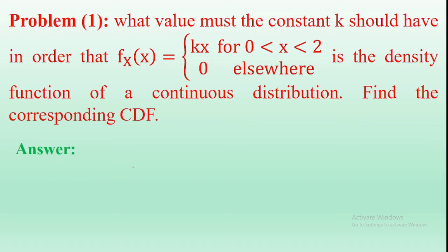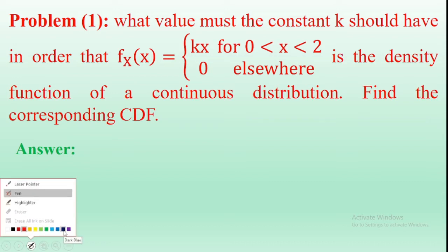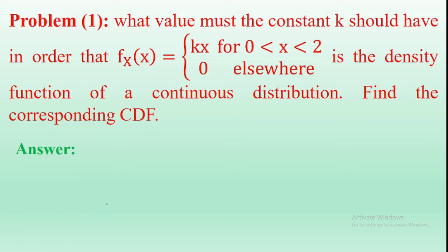So, the given probability density function is: f(x) = kx for x from 0 to 2, and f(x) = 0 elsewhere. This is the density function of a continuous distribution. First, to make it a valid density function, find the constant K value using the condition that the area under the probability density function is equal to unity.